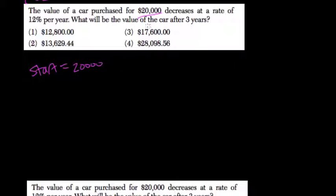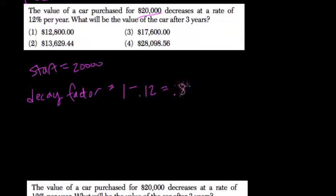And then each year you're losing value. You have a decay factor. So the decay factor, a quick way to find it is to take 1 minus the decimal representation of what the percentage is. So if you're losing 12%, you subtract 0.12. That means you get 0.88.